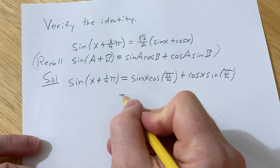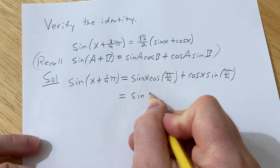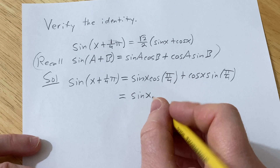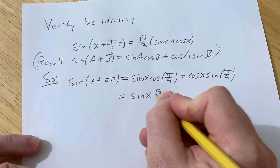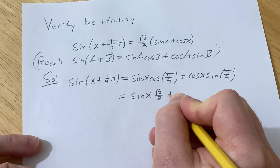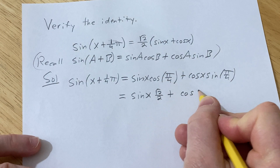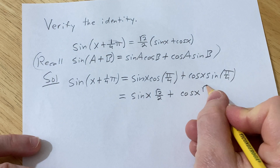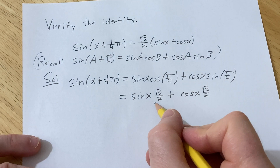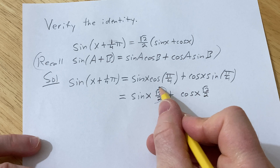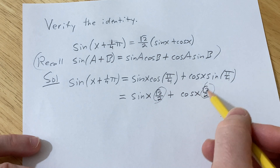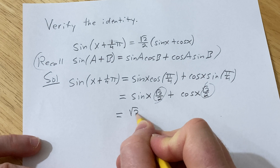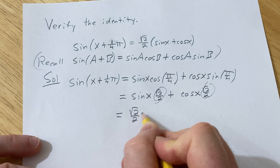So this is equal to sine x. The cosine of pi over 4 is the square root of 2 over 2, plus cosine x. The sine of pi over 4 is also the square root of 2 over 2. We have a square root of 2 over 2 in both terms, so we can pull it out.